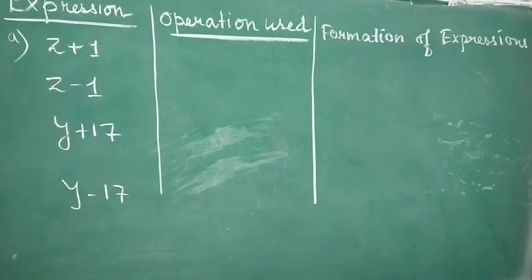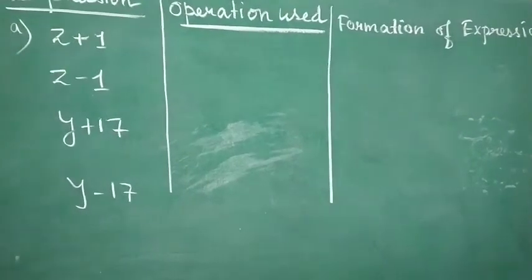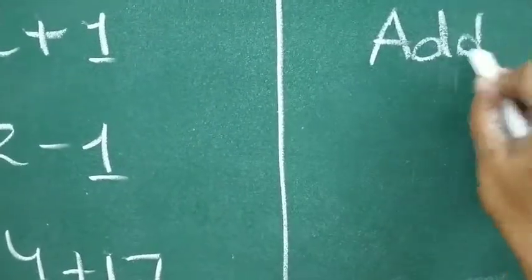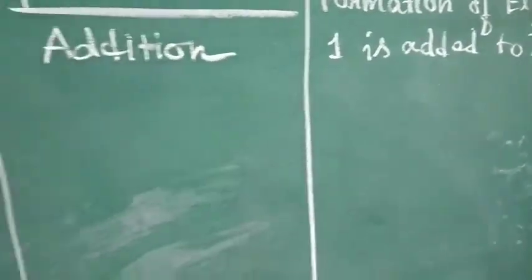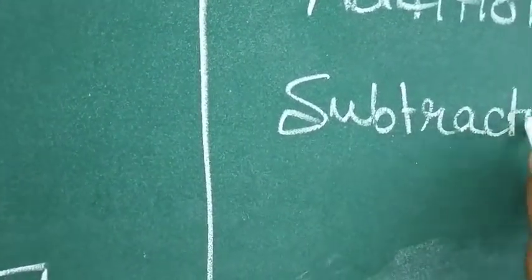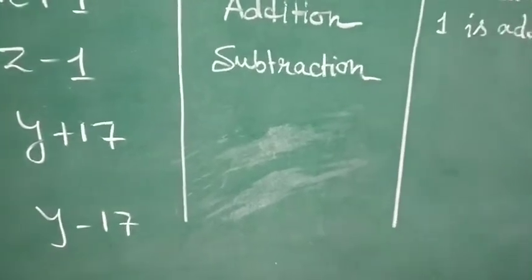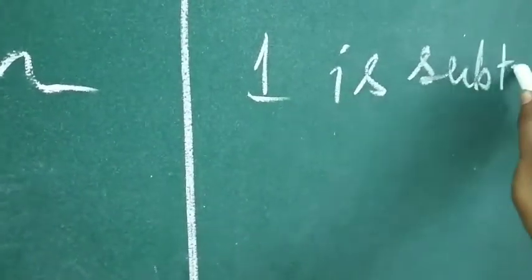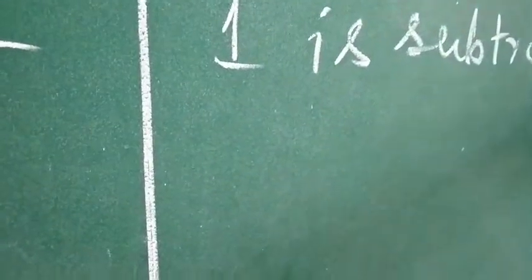Now, here, see in the first one, operation used is addition. So, we will write addition under operation and then we will write how it is formed. Here, we will write 1 is added to z. Now, in the next one, we will write subtraction. And how it is formed? 1 is subtracted from z. So, we will write 1 is subtracted from z.